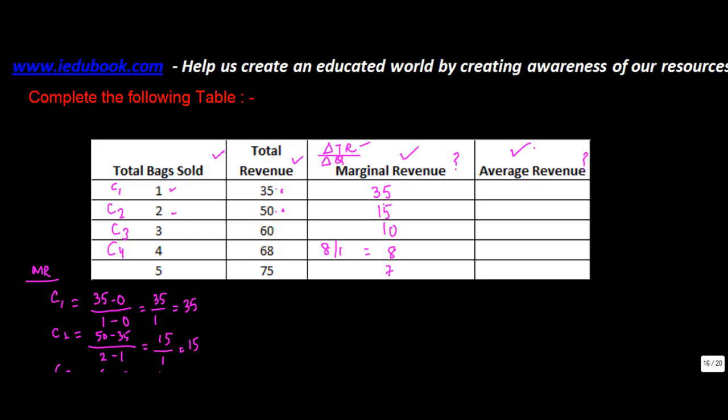Now average revenue. Average revenue is what? Average revenue is nothing but total revenue divided by quantity. So total revenue is 35. Quantity is 1. You get 35 divided by 1 is equal to 35.